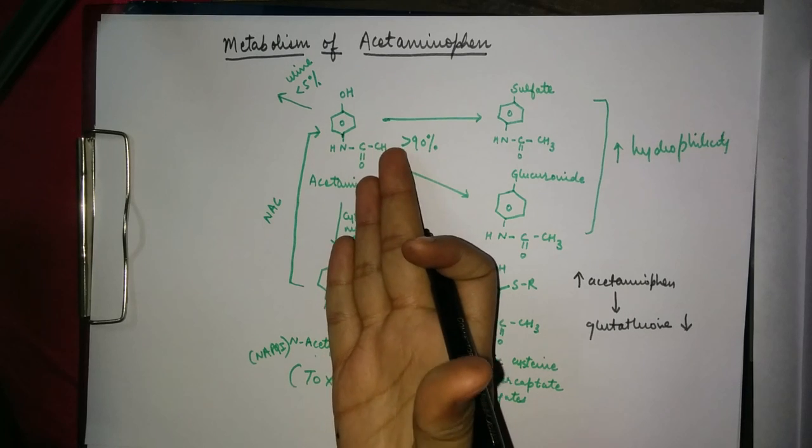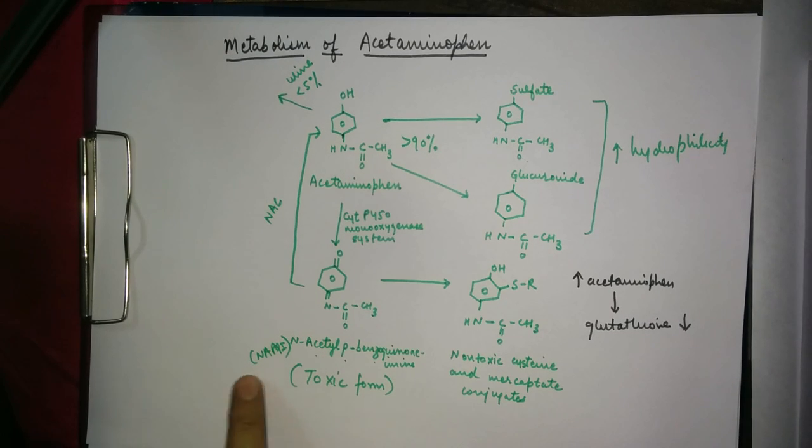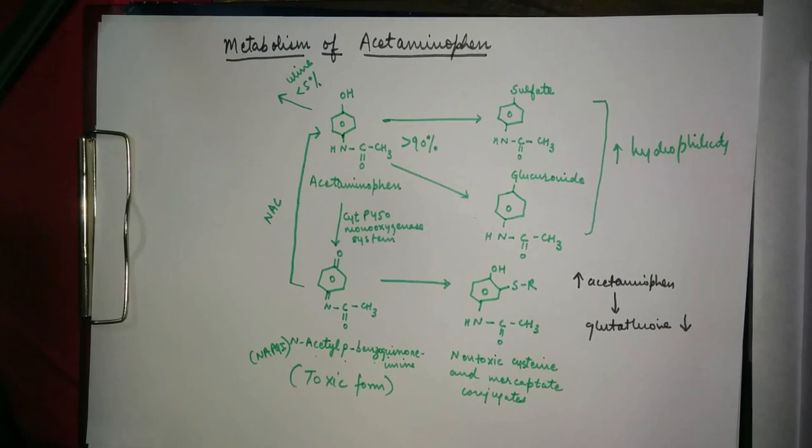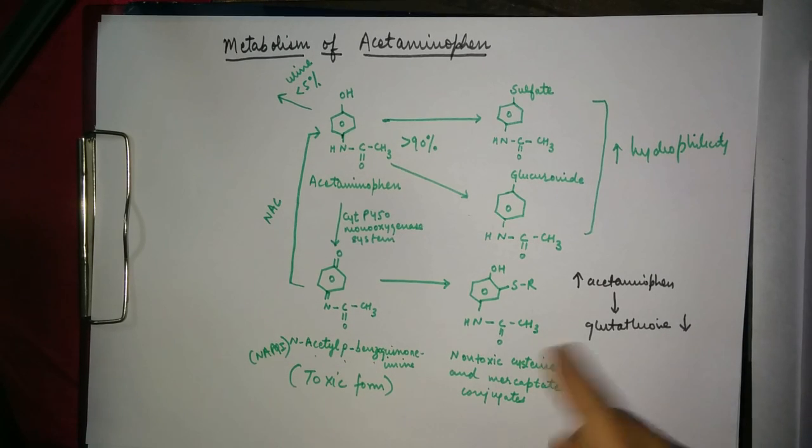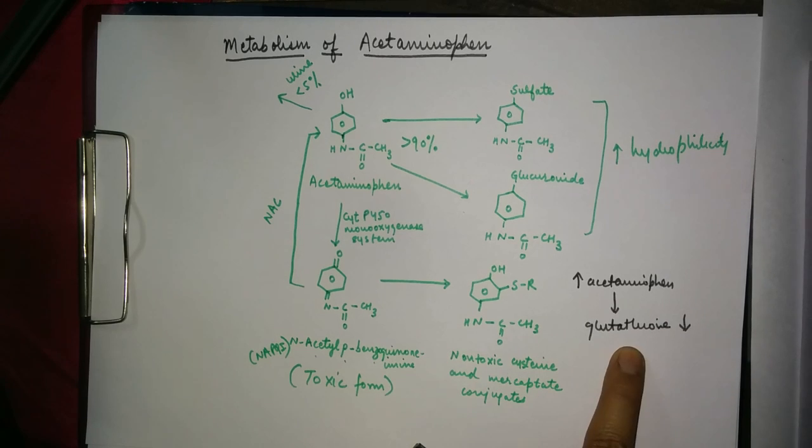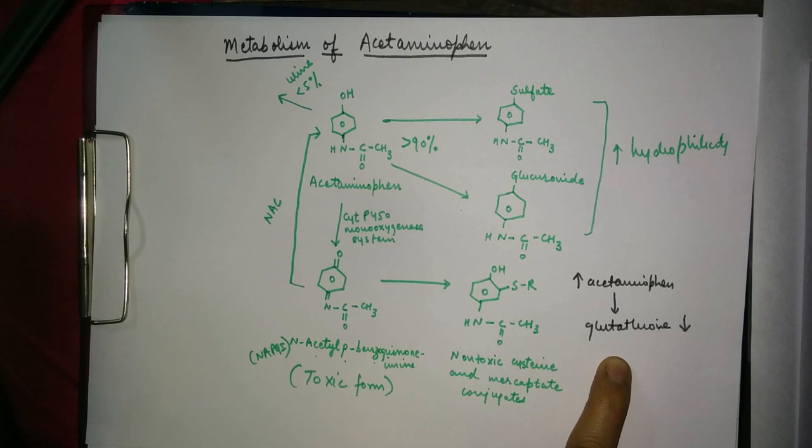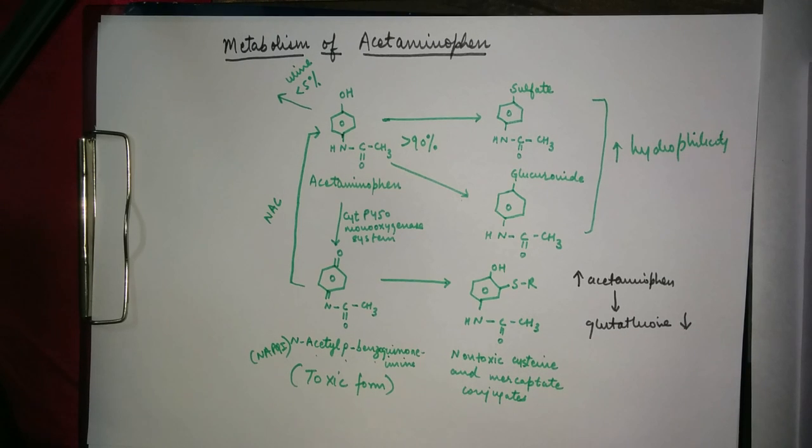Because if there is more acetaminophen, there will be more NAPQI, which leads to more conjugation of glutathione with it to eliminate it from the body. This is because the rate of utilization of glutathione exceeds its rate of formation, and hence there is depletion of glutathione stores in the body.